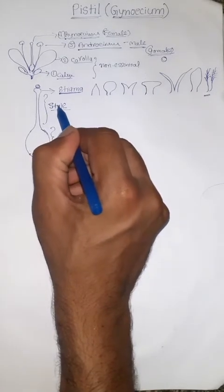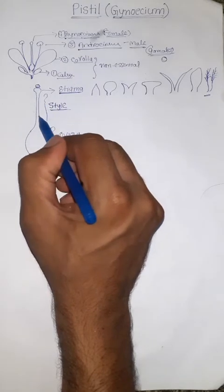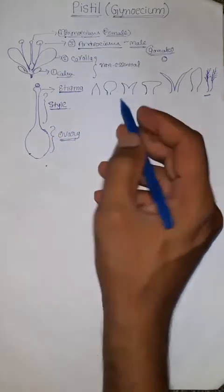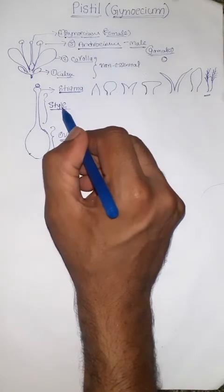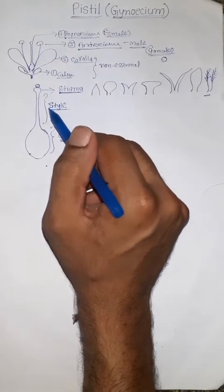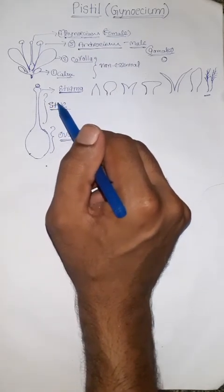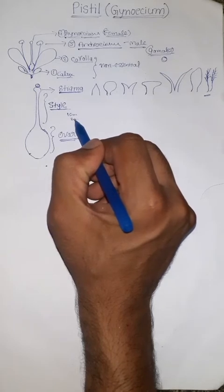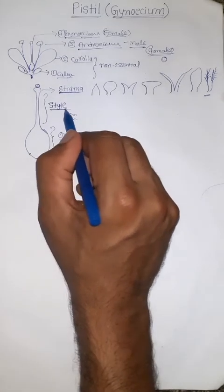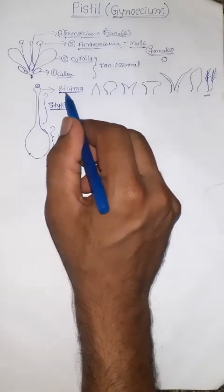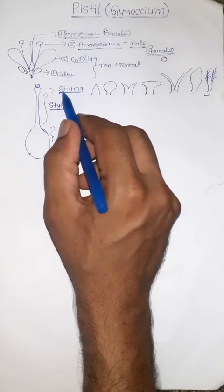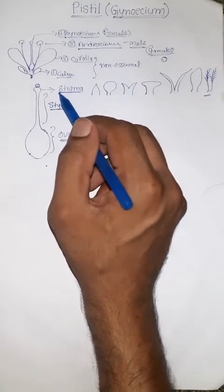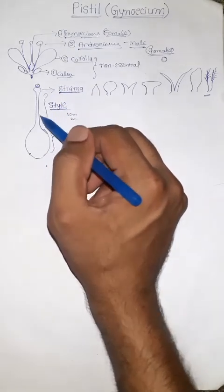The next part is Style. Style is a tube-like, rod-like, or filamentous elongated structure located between the stigma and ovary. The main function of Style is to place the stigma at different heights. Each plant has characteristic features — some styles are one centimeter, some are two centimeters. Based on genetic makeup, the length of style differs from one plant to another. Placing the stigma at different heights facilitates the probability of catching pollen grains.